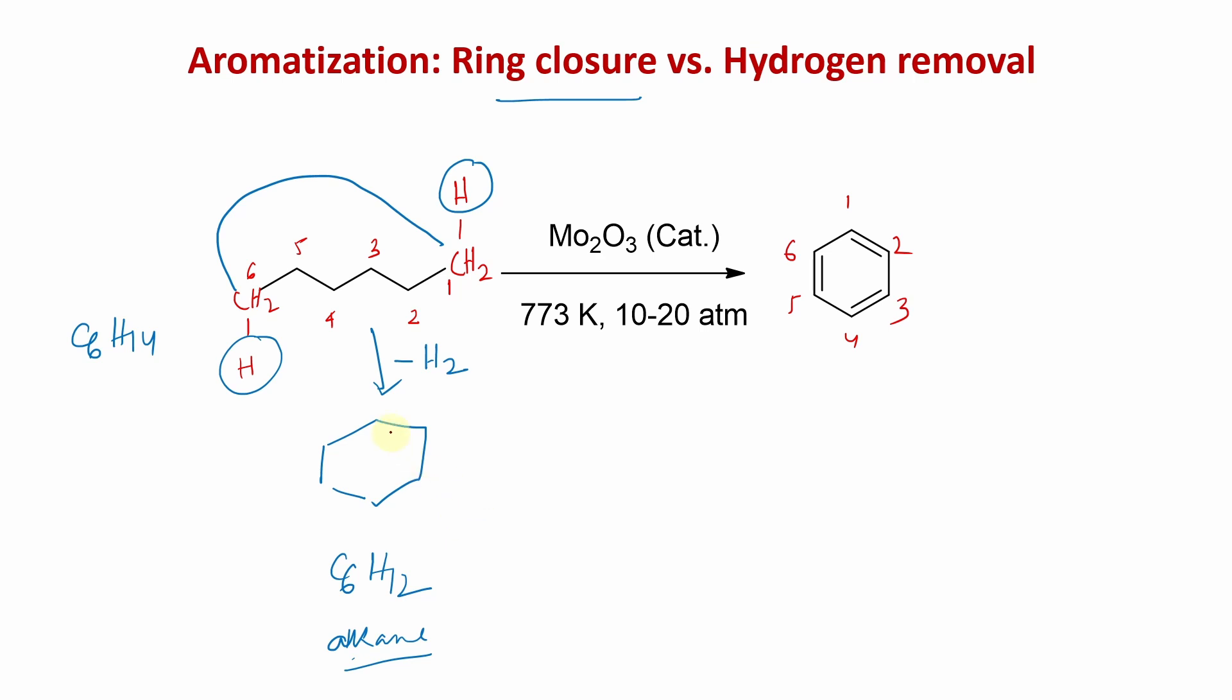This step involves removal of one molecular hydrogen. Now look at the second step. Actually three molecules of hydrogen need to be removed. Every carbon has two hydrogens. One hydrogen is removed to produce cyclohexene. Next step, another molecule of hydrogen removed to produce cyclohexadiene. Next step, another molecule of hydrogen removed to produce benzene. So it is stepwise hydrogen removal. Overall, total four hydrogen removal takes place.